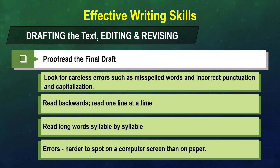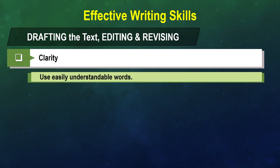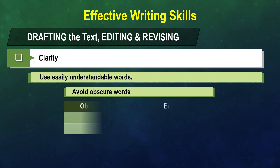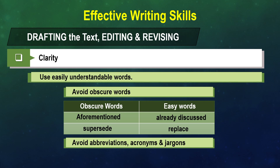Proofread for clarity by using easily understandable words. Avoid obscure words — for example, use 'already discussed' instead of 'aforementioned', and use 'replace' instead of 'supersede'. Also avoid abbreviations, acronyms, and jargons.